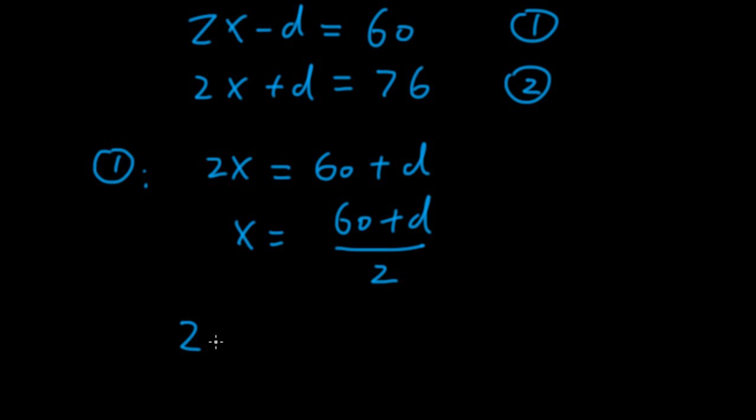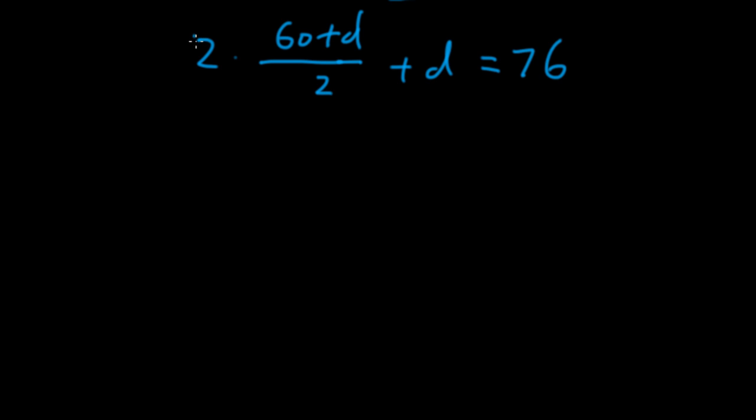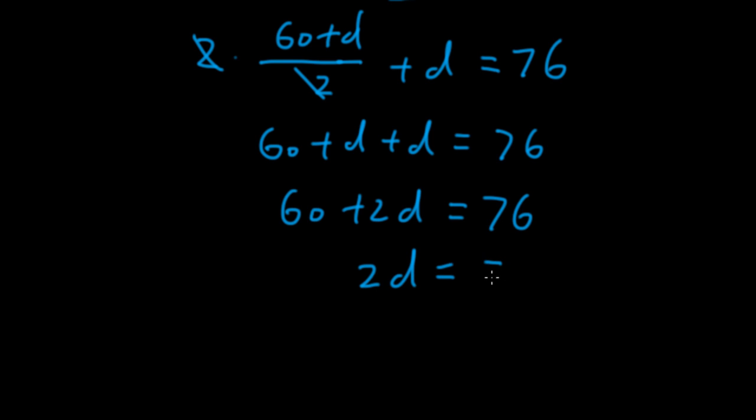We sub this into 2. We have 2 times 60 plus D over 2 plus D equals 76. This cancels out. 60 plus D plus D equals 76. 2D equals 76 minus 60. So 2D is 16. D equals 8. So the common difference that we want to find is equal to 8.